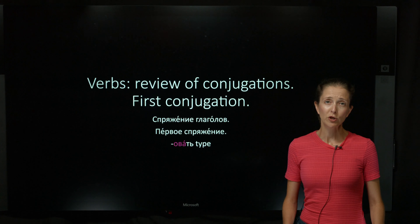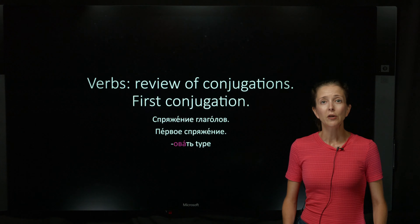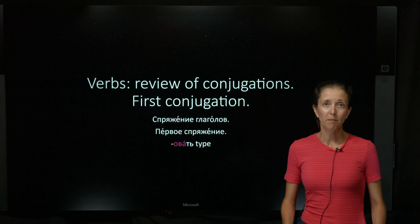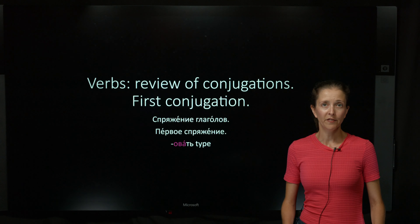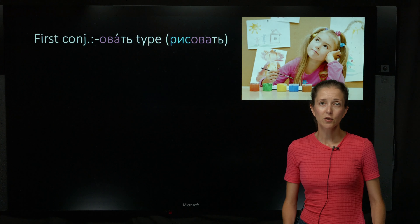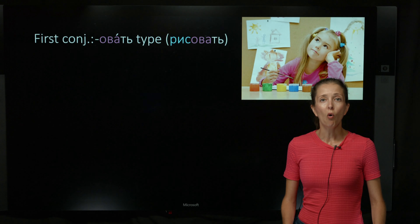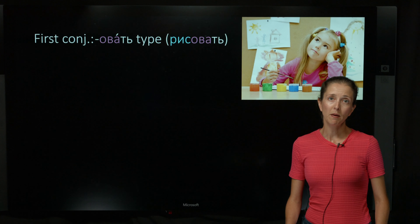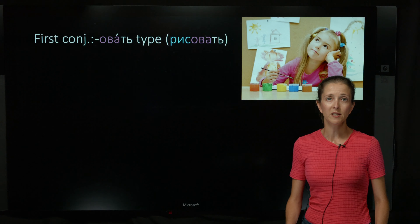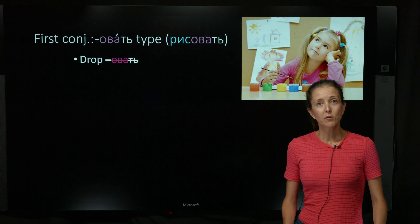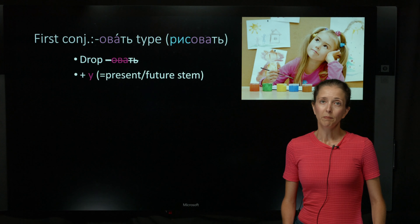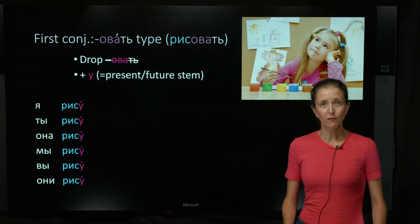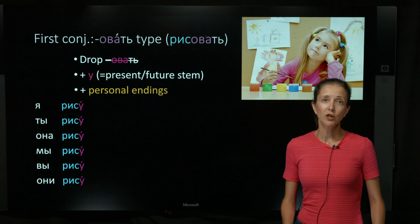In Russian, you cannot predict a verb's conjugation pattern simply by looking at the infinitive — unless your verb ends in овать, like the verb рисовать. Овать-type verbs have a very predictable pattern, and you don't need to memorize any forms if you know it. All you need to do is drop the овать, replace it with У. This will give you your present-future stem, and then conjugate the verb by adding personal endings.